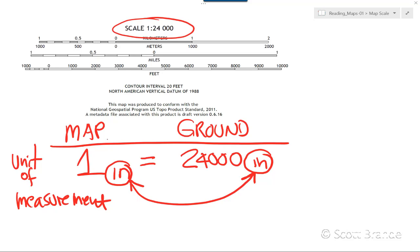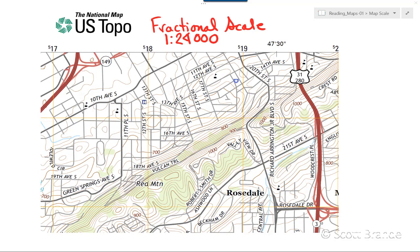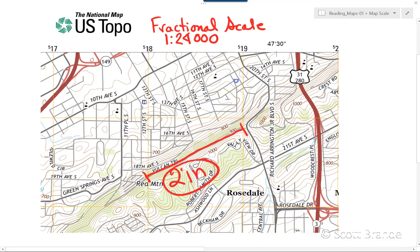Now let's take a specific example. Here's an example of a topographic map at a fractional scale of 1 to 24,000. Suppose we're planning a hike along the Vulcan Trail at the crest of Red Mountain. With our ruler, we measure the length of that hike as two inches on the map. How far would that hike be on the ground? Let's find out.